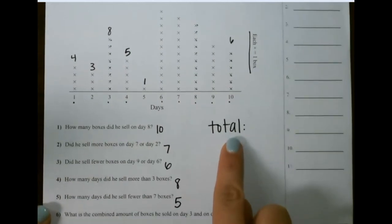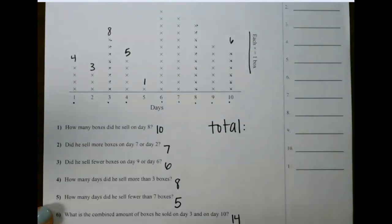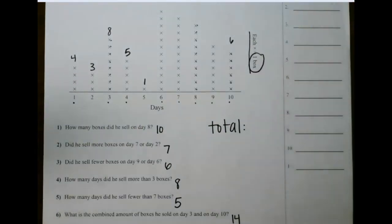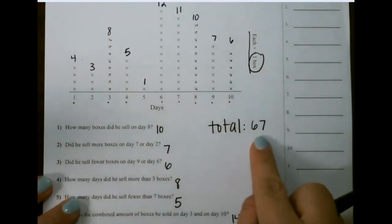So just remember, anytime you're looking at a line plot, each x represents one number in the data. So that means that for every x we see, that would give us a box. So once you count up all of the x's, we would get 67 for our total.